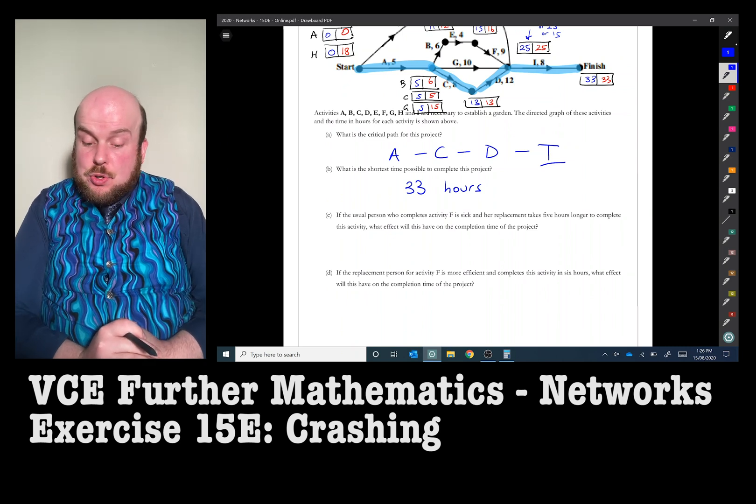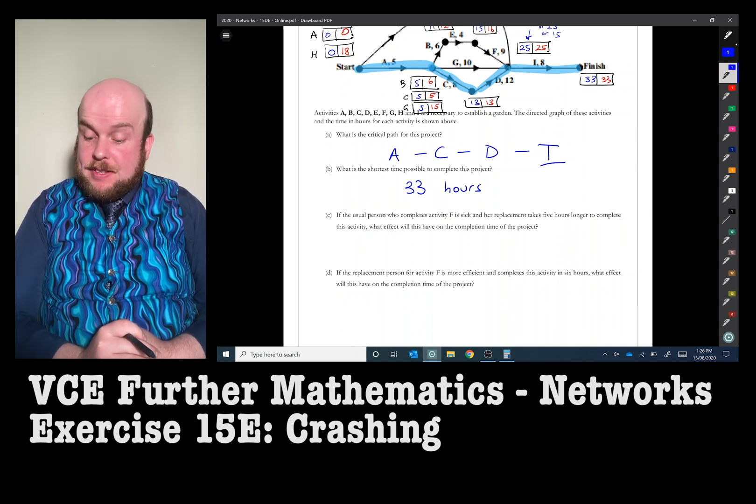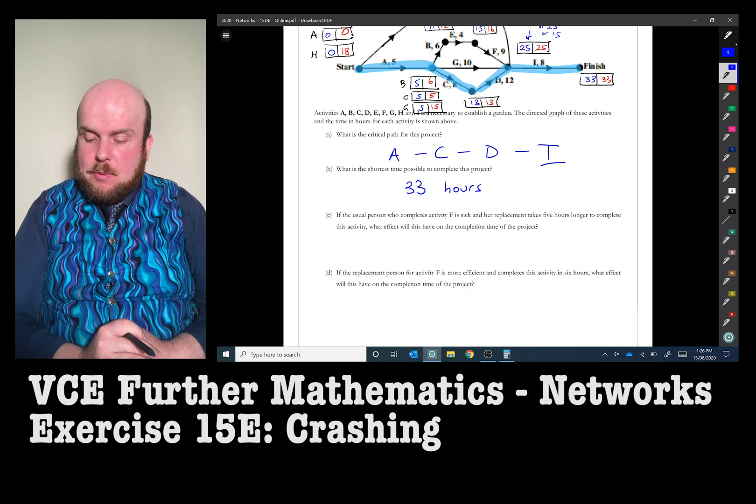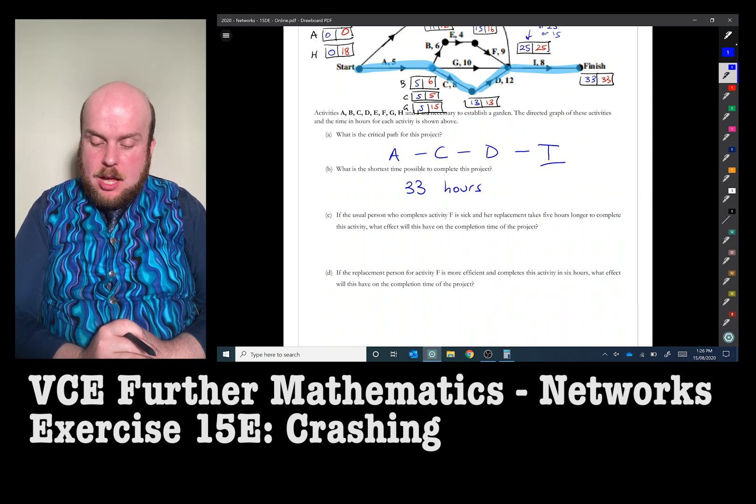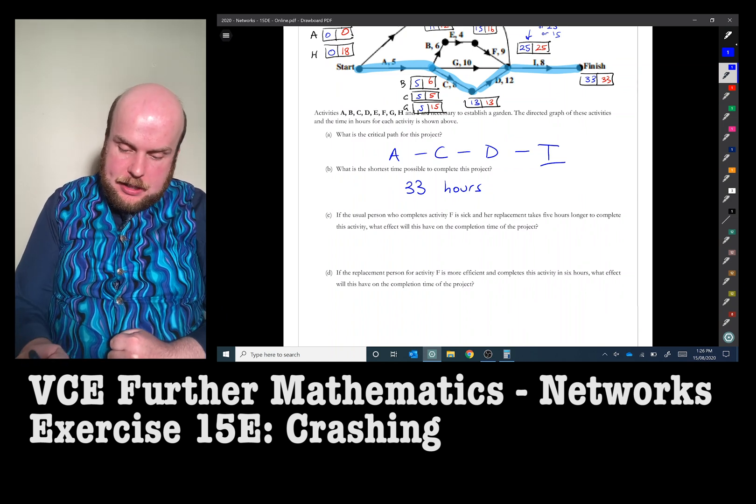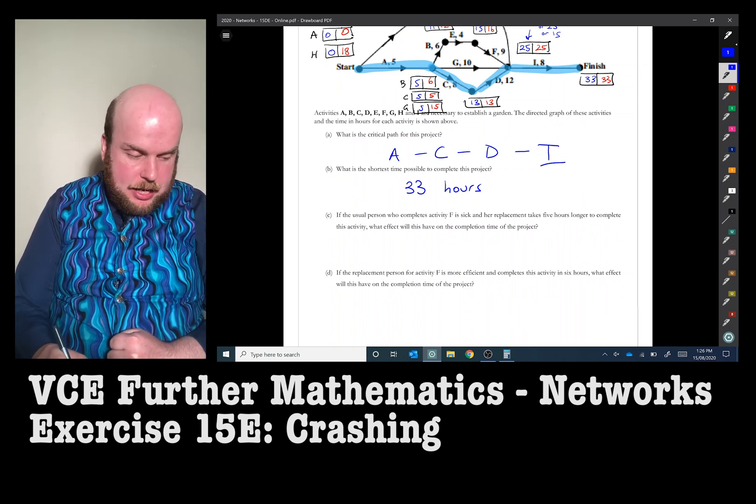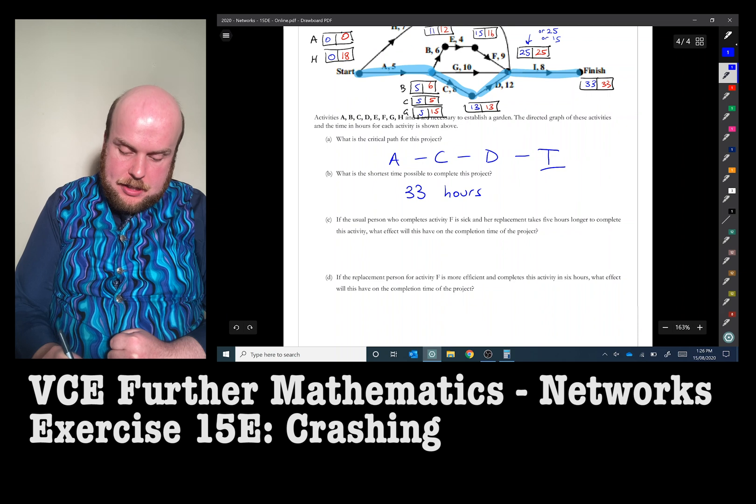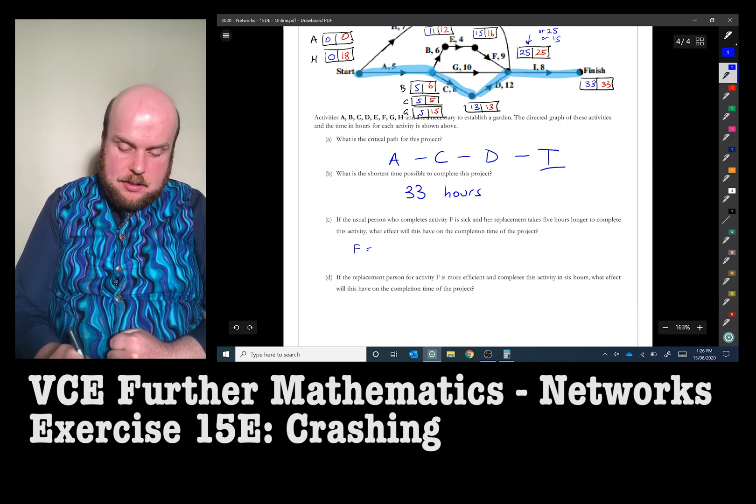Part C: If the usual person who completes activity F is sick and her replacement takes five hours longer to complete this activity, what effect will this have on the completion time of the project? Well, F is currently, as we can see, there's activity F. F is currently equal to nine. So therefore, the new F will be equal to nine plus five, which is 14.